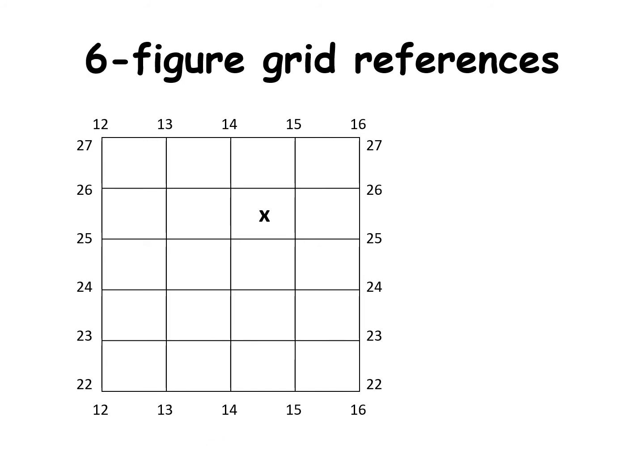I want to move now on to six figure grid references. Six figure means you're going to put six numbers into your answer. We said that X is in square 1425. To turn it into six numbers, we just add an extra number after the 14 and an extra number after the 25.